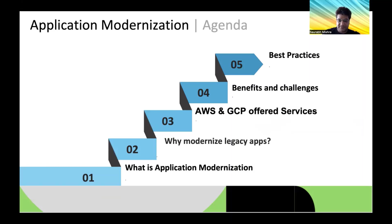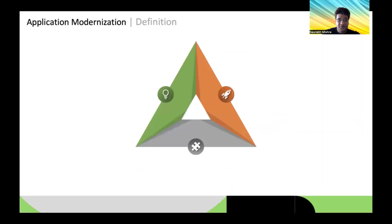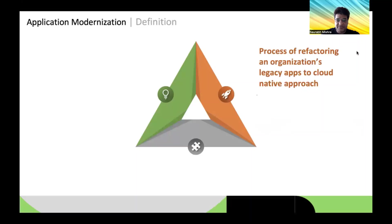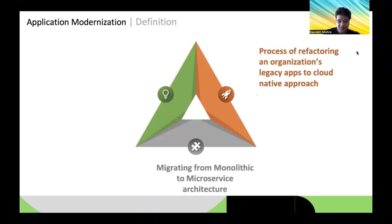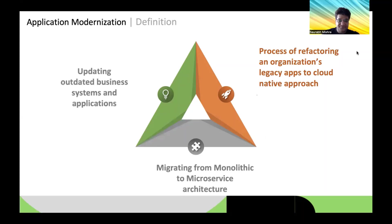Application modernization is the process of refactoring an organization's legacy apps to a cloud-native approach. In other words, it means migrating from a monolithic to a microservices architecture, which we'll be discussing in detail in the upcoming slides.